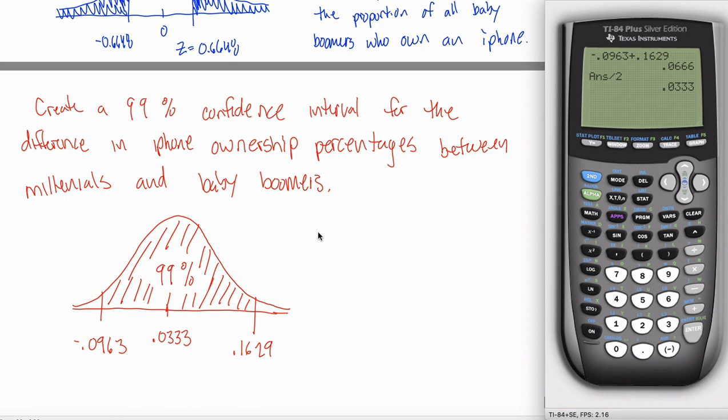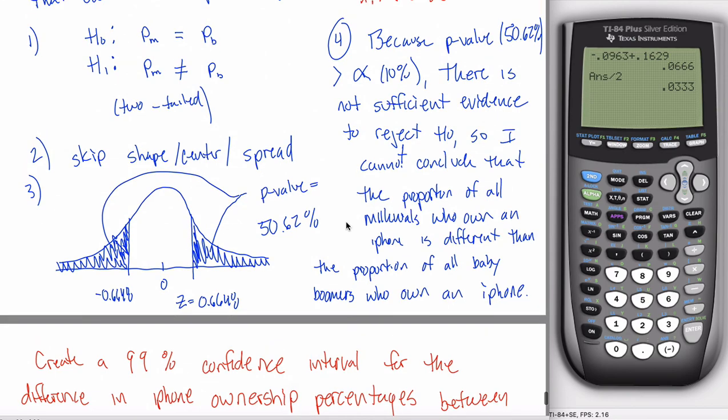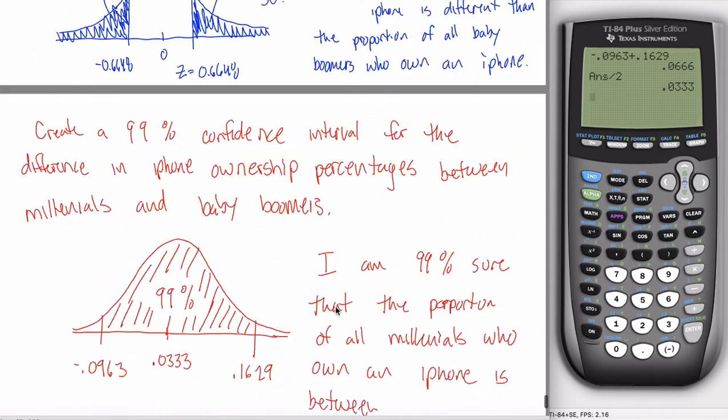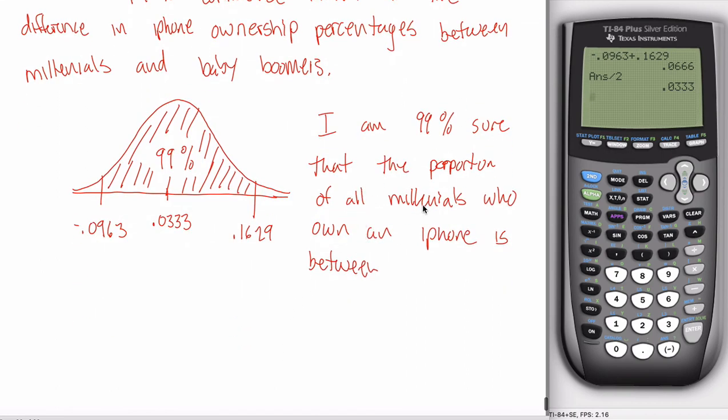And then what you want to do is state your conclusion. I am 99% confident or sure that, and then make sure that you're talking about the population proportions. So the proportion of all millennials who own an iPhone is between, and this is where you have to kind of interpret your answer a little bit. Remember, because we put in the millennial information into the ones, these are kind of relative to the millennials. So the proportion of all millennials who own an iPhone is between 9.63% less and 16.29% more than the proportion of all baby boomers that own an iPhone.